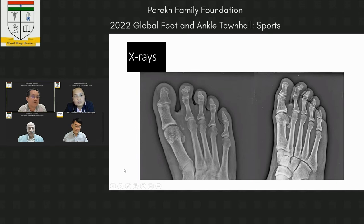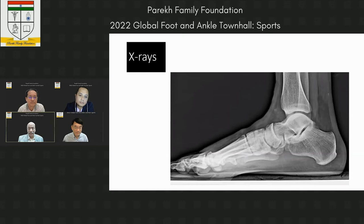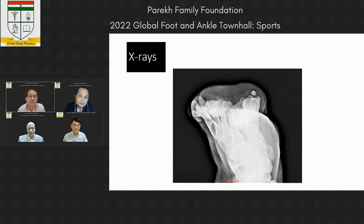Correct — this patient had recurrent habitual medial dislocation of the first metatarsophalangeal joint. These were the x-rays on presentation. We also obtained a sesamoid view. Professor Chua added that the lateral sesamoid appears subluxated from the groove of the MTP joint.